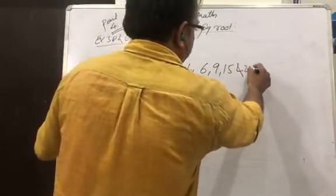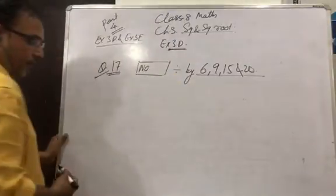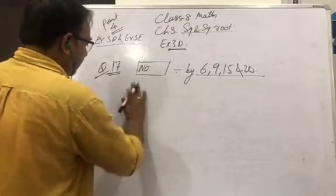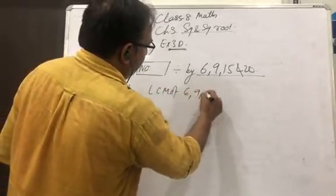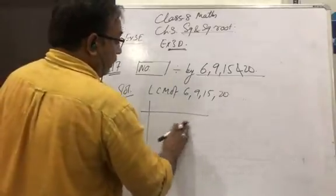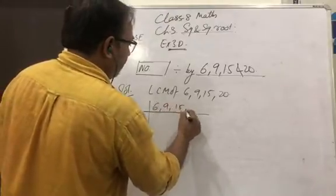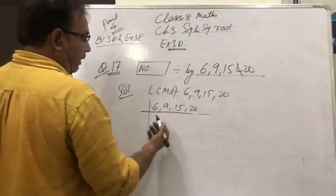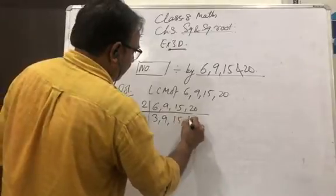In this case, we have to find the LCM of these numbers. So first we take out the LCM of 6, 9, 15, and 20 using the long division method of LCM. Most of the numbers are divisible by 2 or 3, so we start with 2: dividing gives 3, 9, 15, and 10.